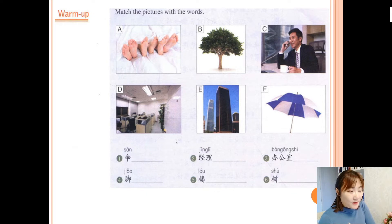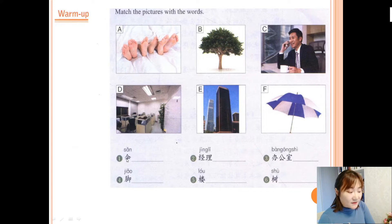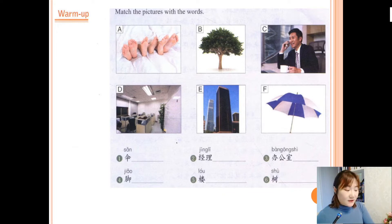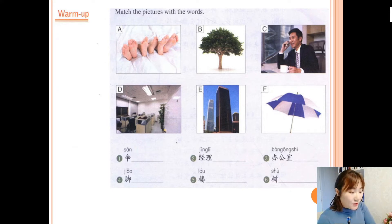So match the pictures with the words. Let's look at the words first. The first one: 伞, that means umbrella, so we need to choose F. Next one: 经理, that means manager. So choose C. Next: 办公室, office. So choose D.